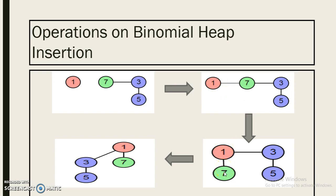So now we have two trees with the same degree of 1, so now we have to combine both of them. Among 1 and 3, 1 is the minimum, so 1 will become root and the other tree will become a child of it. This is how insertion operation is carried out in binomial heap.